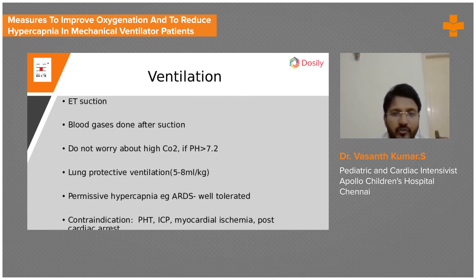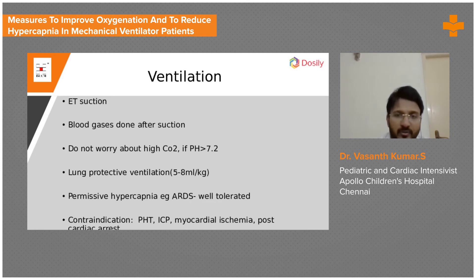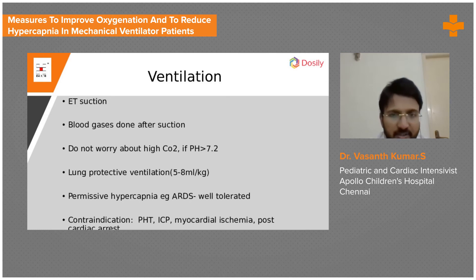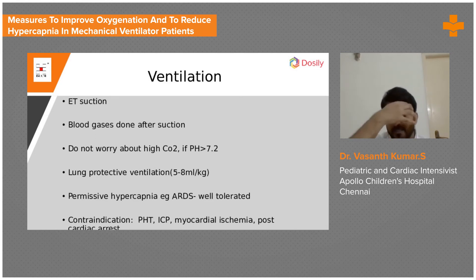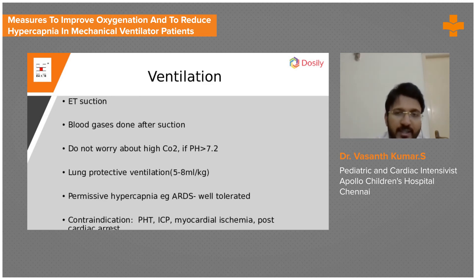Do not worry about high CO2 levels provided the pH is above 7.2. The current trend is toward lung-protective ventilation — we accept higher CO2s as long as the pH remains above 7.2. Also, if you get a normal CO2 in a ventilated patient, that means you are over-ventilating. Normal CO2 is not normal in this context — you should reduce tidal volumes. This strategy of accepting high CO2 is called permissive hypercapnia.